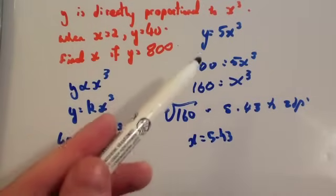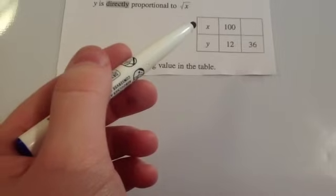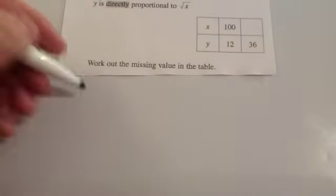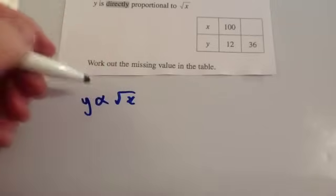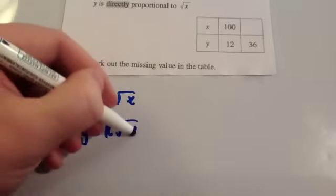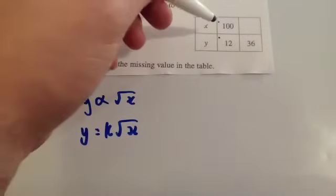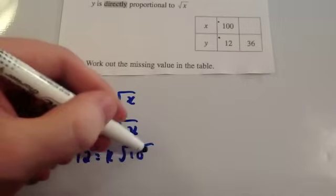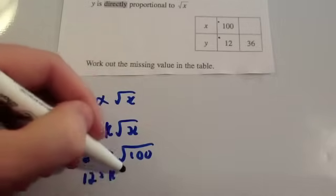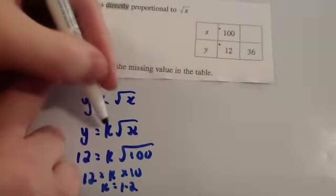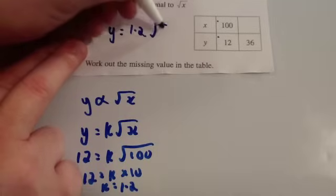Whenever you're trying to find the subject letter, you just solve it like an equation. Last example: Y is directly proportional to the square root of X. When X equals 100, Y equals 12. Start with Y is proportional to the square root of X, then replace the proportional sign: Y equals K times the square root of X. Substituting: 12 equals K times the square root of 100, which is 10. So 12 equals 10K, giving K equals 1.2. The formula is Y equals 1.2 times the square root of X.